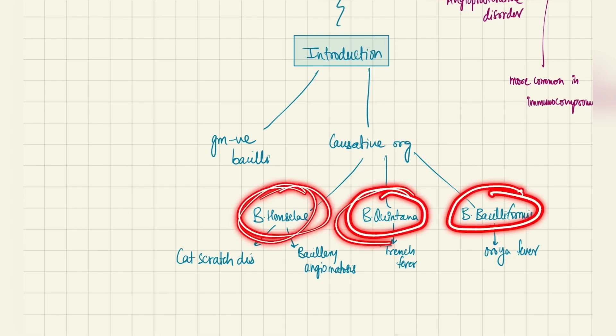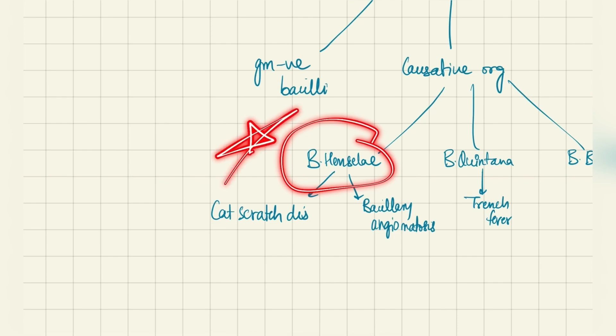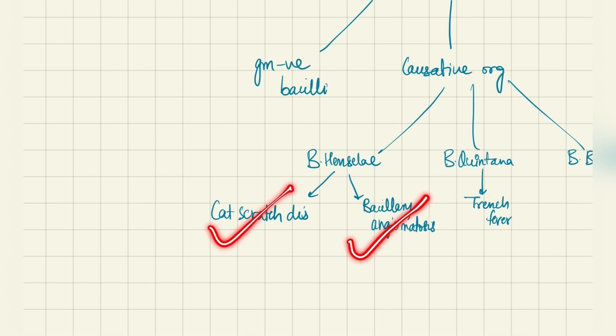Henselae, Quintana and bacilliformis. Bartonella henselae is the main causative organism. It causes cat scratch disease and bacillary angiomatosis. Both of these are important, very important.